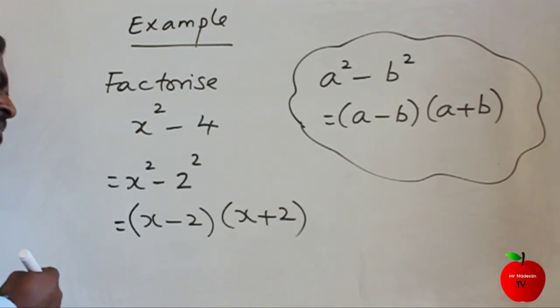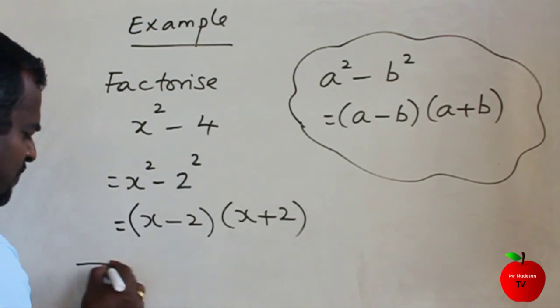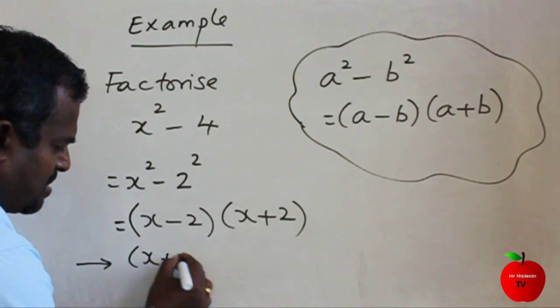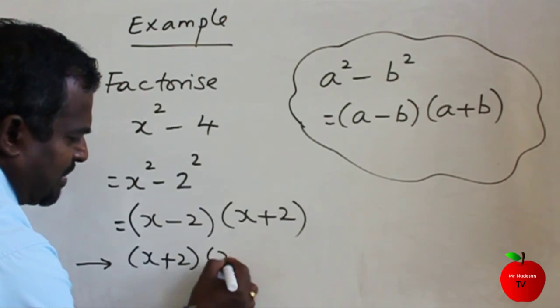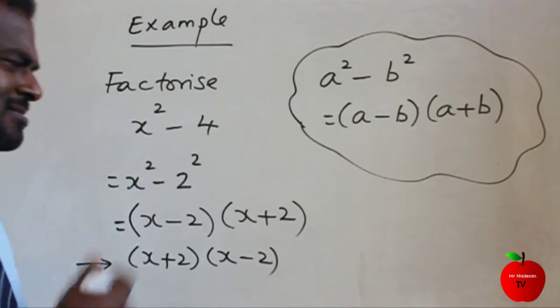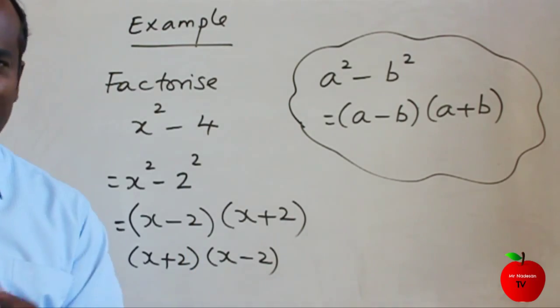Some people might put x plus 2 first and then x minus 2 — that is also correct. They ask which way they can put it.